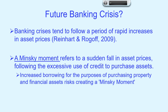Reinhardt and Rogoff in their 2009 book suggested that banking crises tend to follow periods of rapid increases in asset prices, because banks become increasingly reliant on speculators borrowing money. When those speculators go into negative equity, they walk away from their debts, and if non-performing loans are sufficiently large relative to a bank's total assets, the banks fail. In financial markets, this is called a Minsky moment — a sudden fall in asset prices following excessive use of credit to purchase assets — as may have occurred with share prices in March 2020.